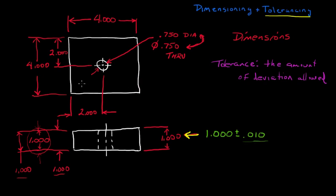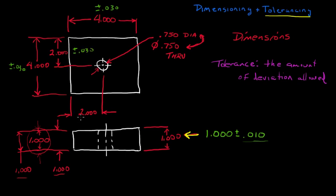He could do the same thing for the remaining dimensions. For the four inches, he might say plus or minus thirty thousandths of an inch is fine. And for the two inch dimensions, he might say the same thing — plus or minus thirty thousandths of an inch is fine.